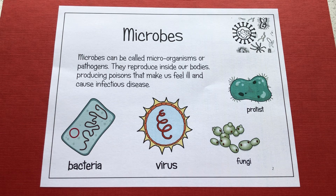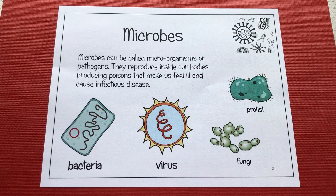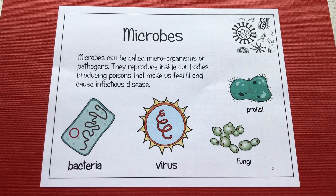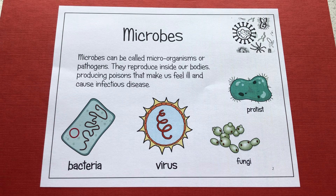There are four different categories within the pathogen group. We have bacteria — an example would be salmonella, which causes food poisoning. We have viruses, which reproduce inside our cells, and an example is the flu virus. We have fungi — an example is athlete's foot. And we have protists — an example of that is malaria.